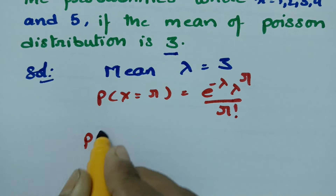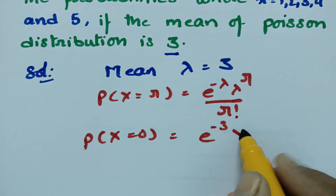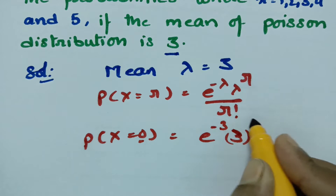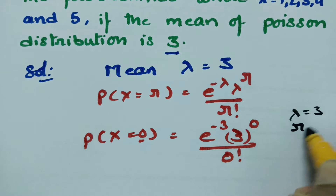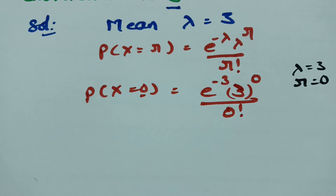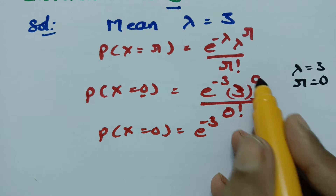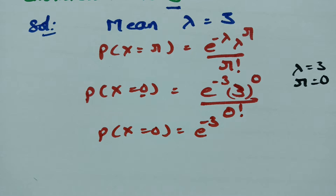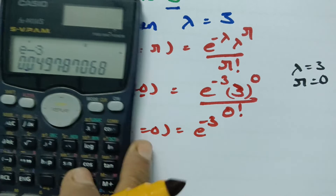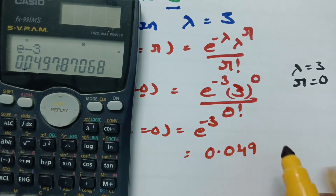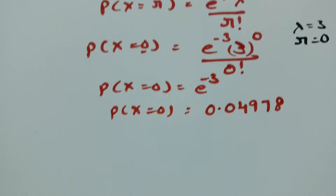First, consider P(x = 0). Substituting into the formula: e^(−λ) × λ^0 / 0!. Here lambda is 3, anything to the power 0 is 1, and 0 factorial is 1. So P(x = 0) = e^(−3) = 0.04978.